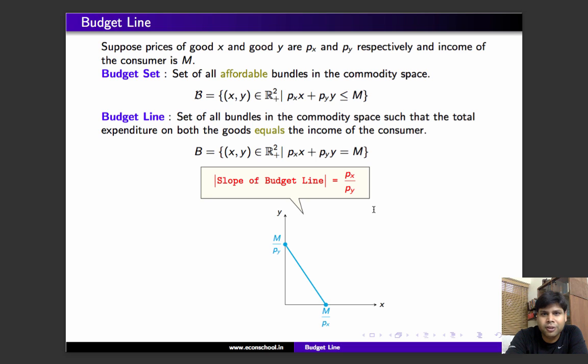We call the boundary of the budget set the budget line. This is the set of all bundles such that the expenditure on both goods equals the income of the consumer.